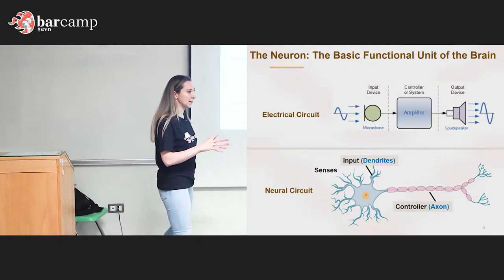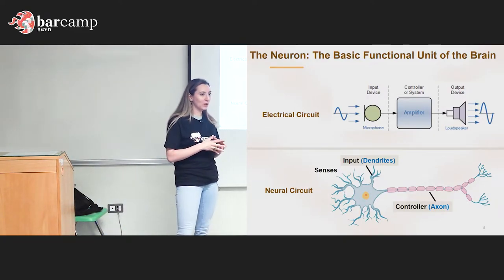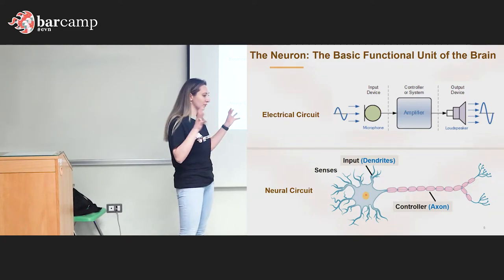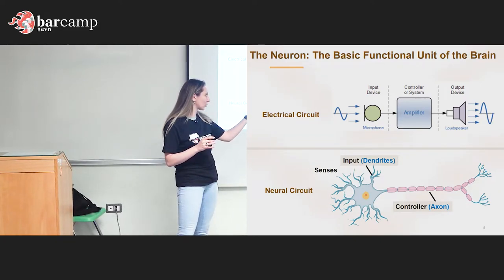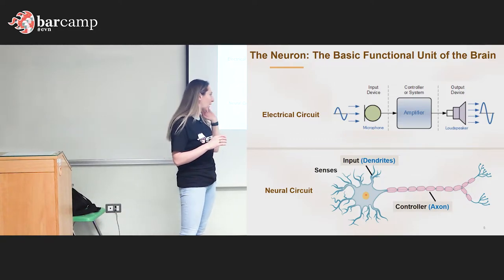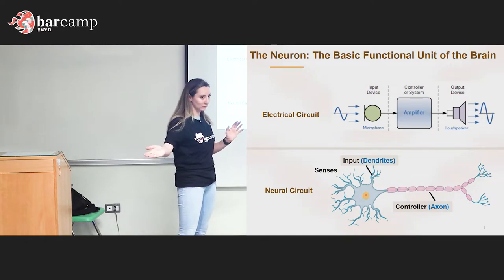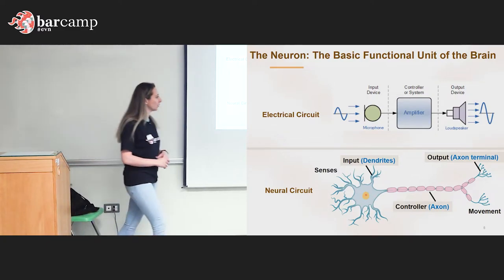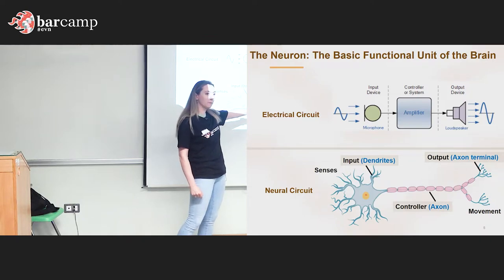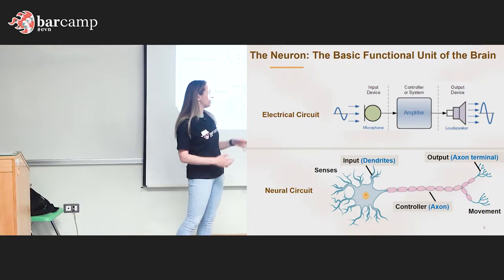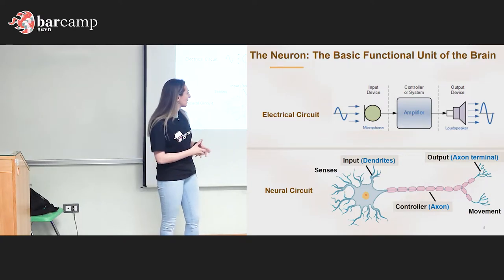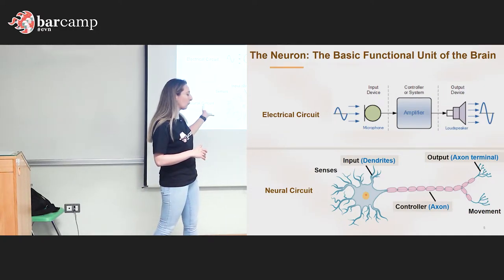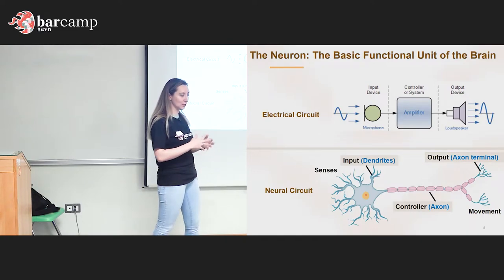Then we have the axon, which acts as the controller and amplifier — it speeds up information travel. Without myelin, it would take about 100 times longer for information to reach the output, which are the axonal terminals. Unlike my speaker example with one output, neurons have multiple terminals, meaning multiple outputs. On average, a neuron has about a thousand inputs and outputs in total.